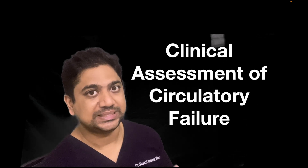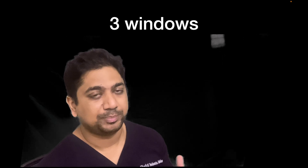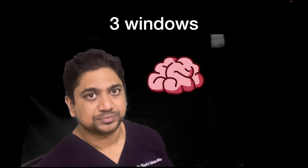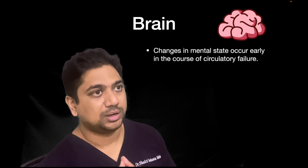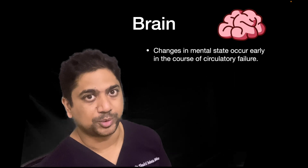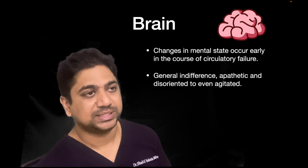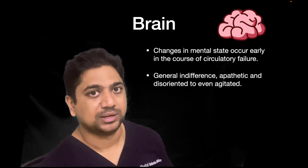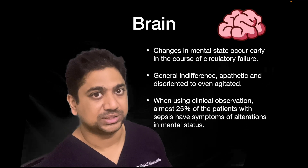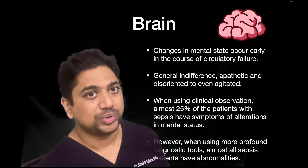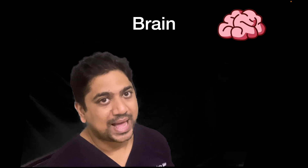There are basically three windows in our body for peripheral circulation assessment: the first is the brain, the second is the skin, and finally the kidney. The brain is one of the earliest organs affected in circulatory compromise. Features such as agitation, delirium, and apathy signify hemodynamic compromise. Studies have shown that 25% of patients in septic shock have a clear neurological manifestation, and with more profound neurological testing, hemodynamic compromise is associated with almost 100% neurological involvement.